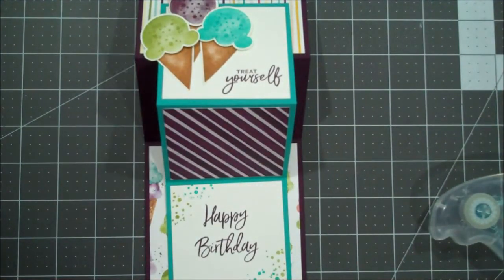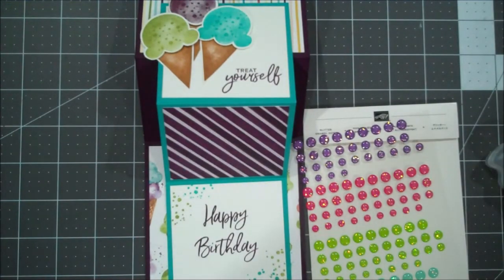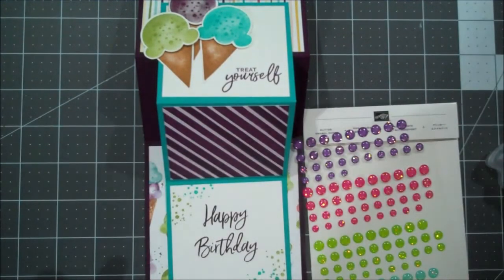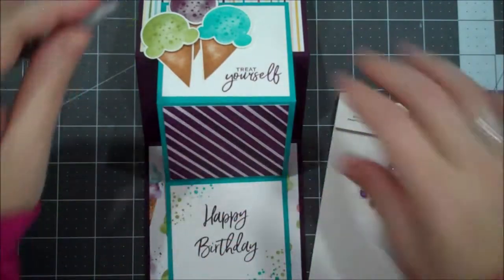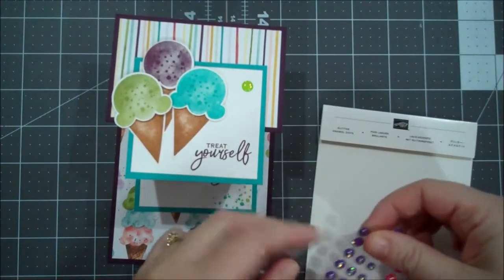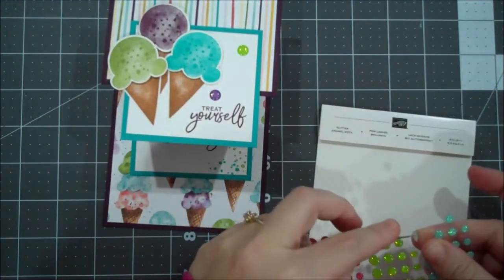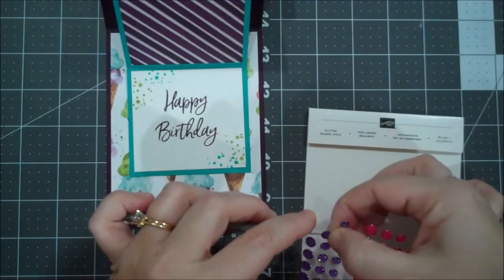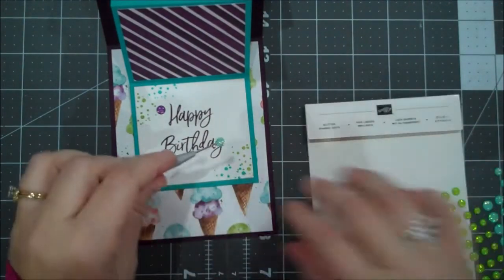Now I did add a few glitter enamel shapes. Now these are retired, but I love them. So I have them all over the place. So you can definitely use another embellishment or if you still have these, I don't know what I did with my little piercer. So I'm going to grab a couple of these and kind of add them up here. Use the purple. I just love these. Put another one over there. And then I'm also going to add a couple to the inside.